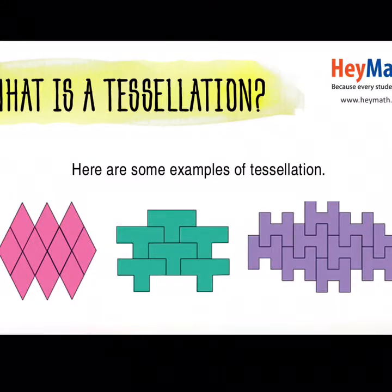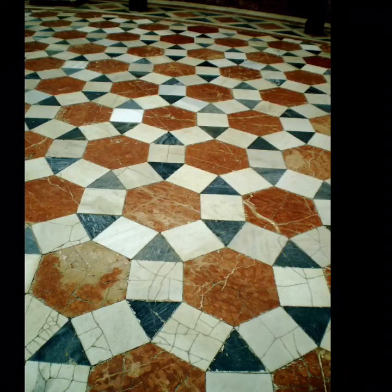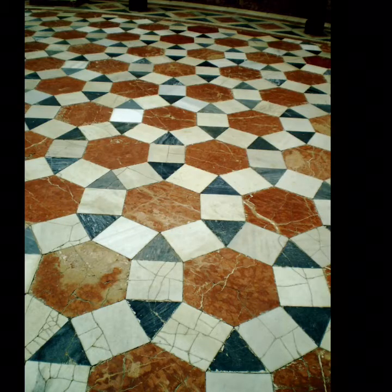A tessellation is a repeated geometric design that covers a surface without gaps or overlaps. Tessellations occur in nature. Tessellations can be made up of more than one shape as long as it meets the rules of covering a surface with no gaps or overlaps.